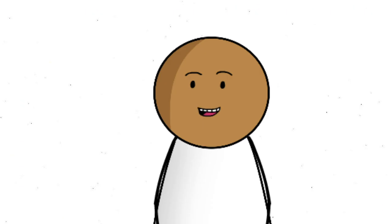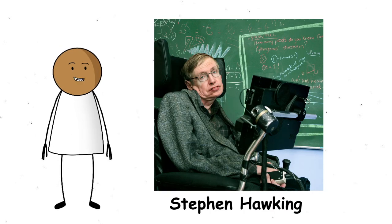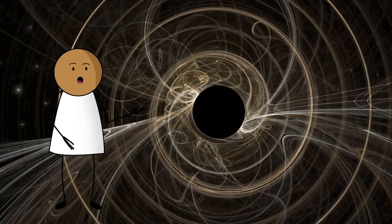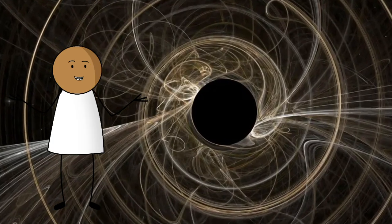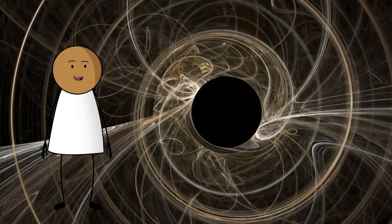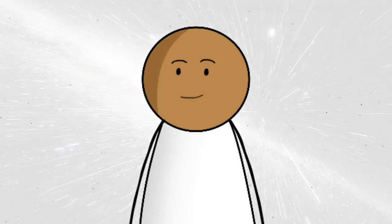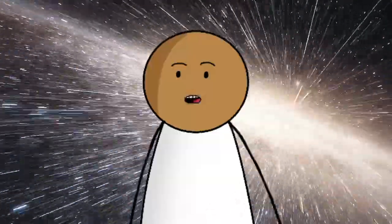Oh, and get this. Black holes can evaporate. Hawking radiation, named after the legendary Stephen Hawking, is a theoretical type of radiation that lets black holes slowly lose mass over time. So even these monstrous cosmic gluttons might eventually just fizzle out, quietly, like the end of a bad party. Let's not even get into the possibility that black holes could be gateways to other universes. That's for another video.